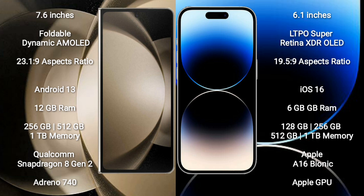Samsung Galaxy Z Fold 5 comes with 12GB RAM and 256GB, 512GB, or 1TB internal storage, with a Qualcomm Snapdragon 8 Gen 2 processor and Adreno 740 GPU. iPhone 14 Pro comes with 6GB RAM and 128GB, 256GB, 512GB, or 1TB internal storage, with an Apple A16 Bionic processor and Apple Graphics GPU.